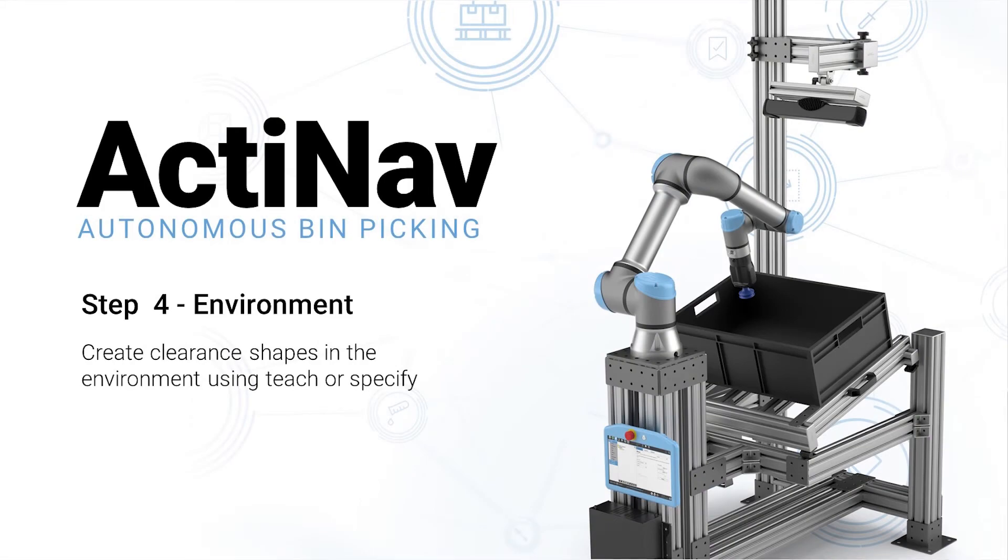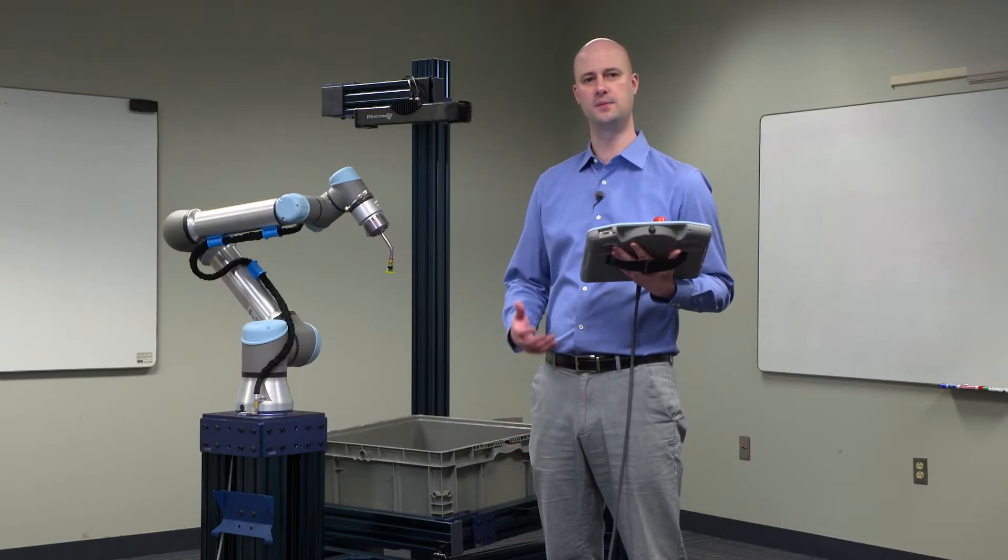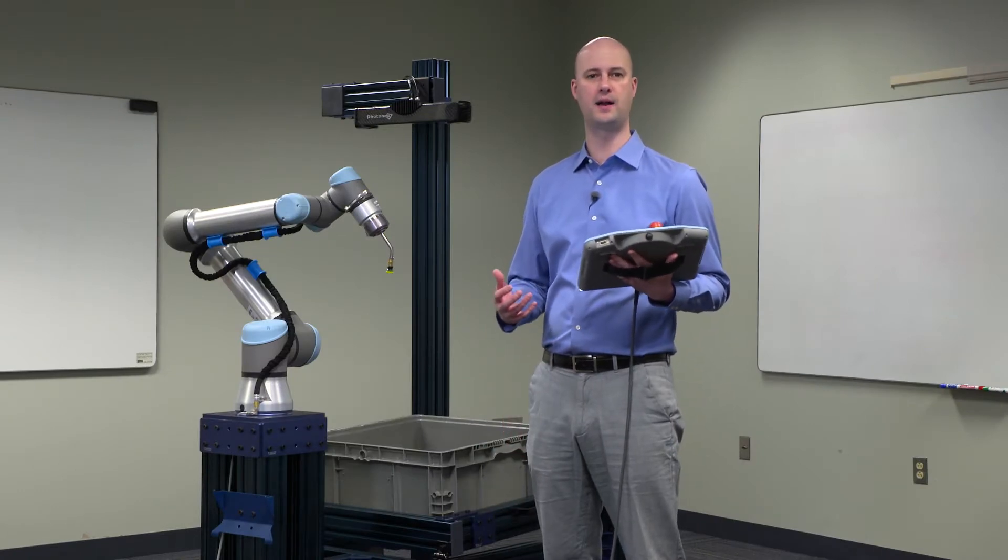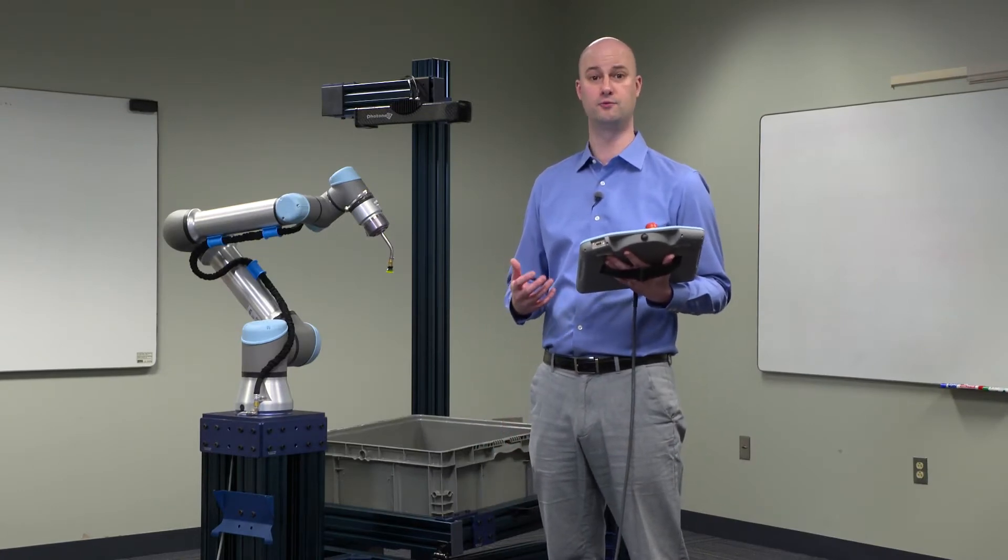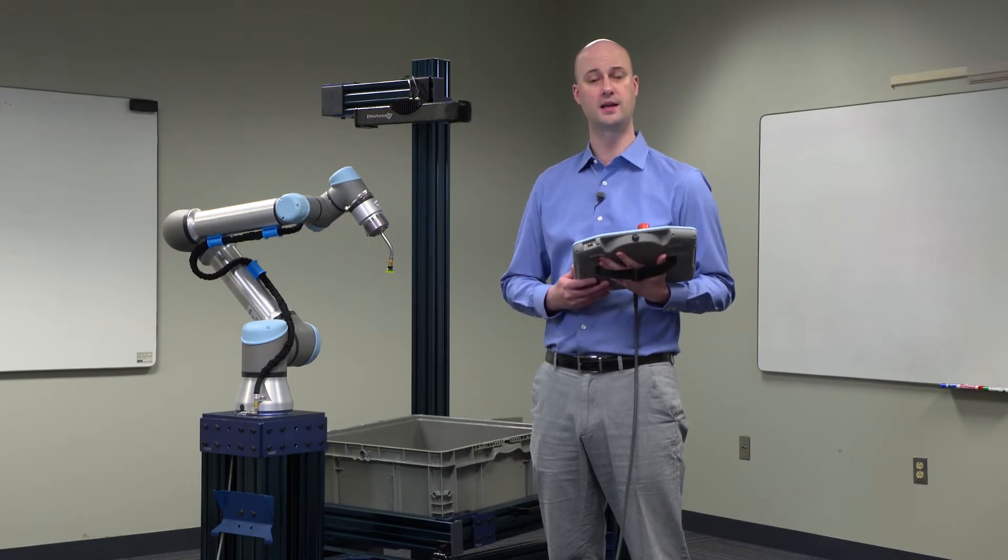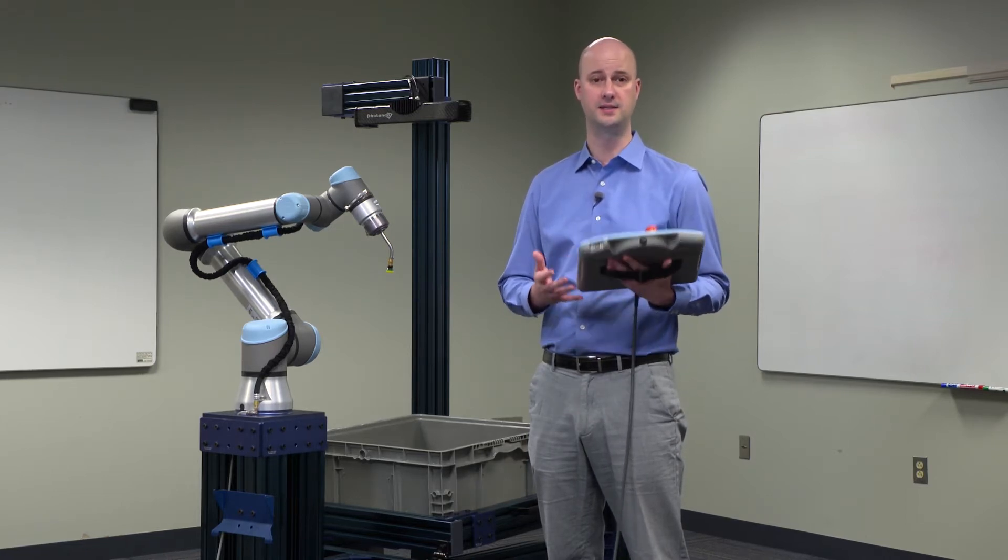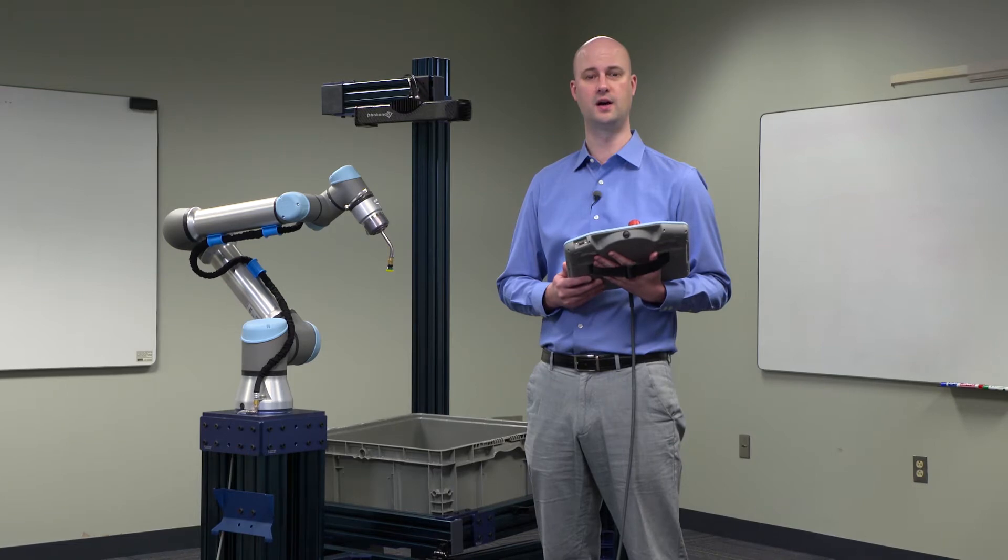Our fourth step is to train the environment. The environment is the space that the robot operates in and can reach. The robot can be easily trained in place in front of machines.